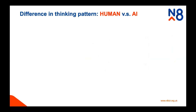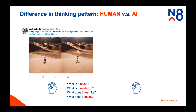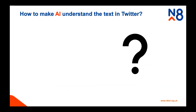I'd like to start from the difference in thinking patterns between humans and AI. For us as humans, when we look at Twitter information, we can understand it from the words - we can ask various questions: what is it about, what is it related to, what does it feel like? But if we want to write algorithms or a small AI to understand things, it just gets ones and zeros because they are built based on ones and zeros. So how do we make AI understand text in Twitter?